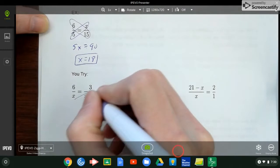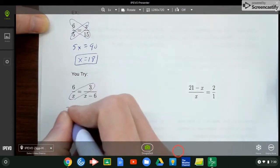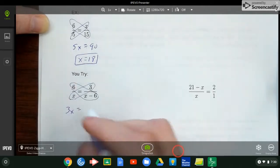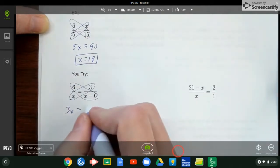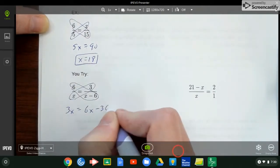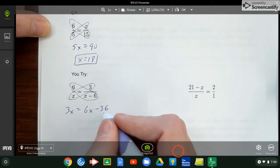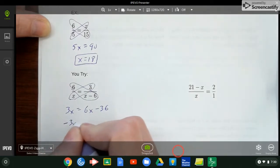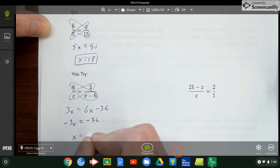Your cross product: 3 times x and 6 times (x minus 6). Remember to distribute here: 6x minus 36. That's a step a lot of people forget. And now it's just a matter of moving things to each side. I'll move my 6x over and I'll divide by negative 3, so x is 12.